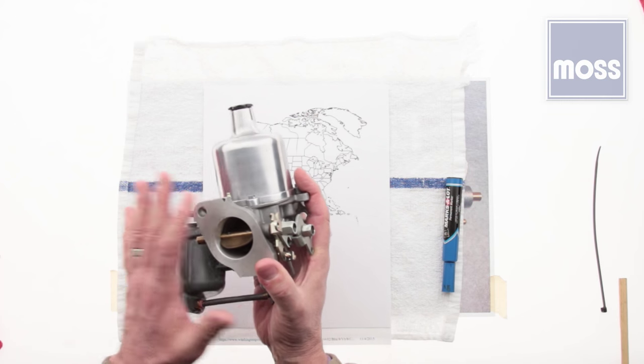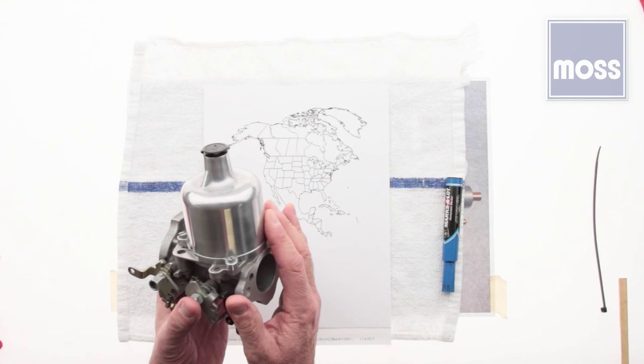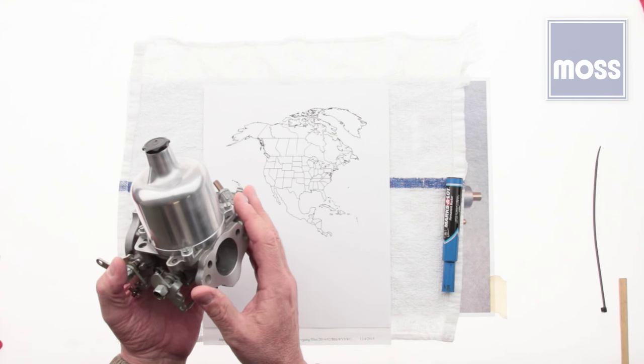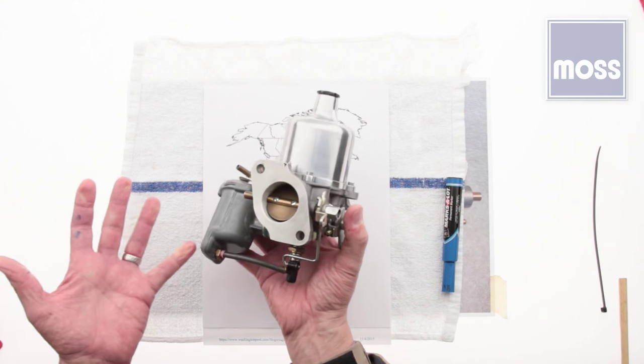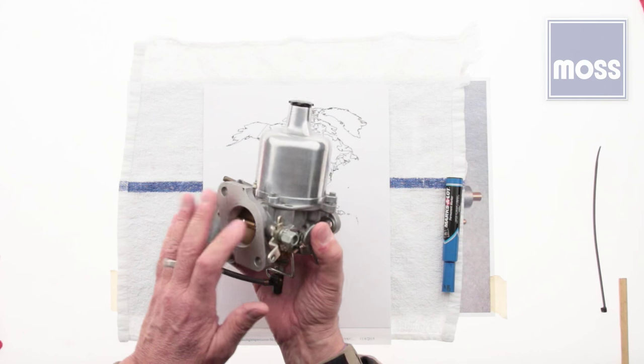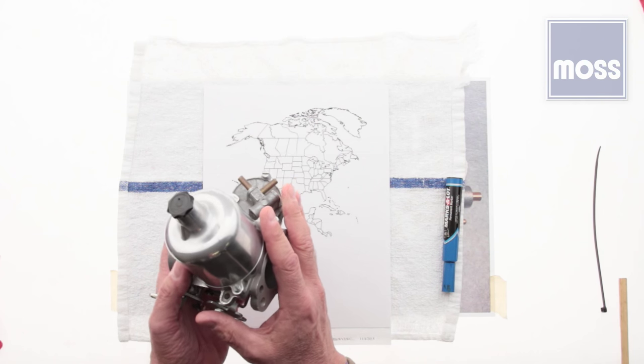The side-draft carburetors in our classic British cars are quite different from the downdraft carburetors many other automotive applications use. Side-draft carburetors aren't complicated, but as is often the reality, things we don't understand can be intimidating. Let's have a look at how these elegantly simple and effective carburetors work.